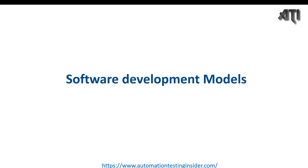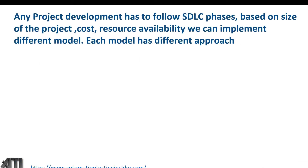Let's talk about what are the different software models we have in the industry. Any project development has to follow SDLC phases - requirement analysis, design, coding, testing, release, and maintenance. Based on the size of the project, cost, and availability, we can implement different models as per SDLC phases. Each model has its own different approach.